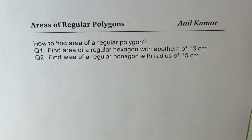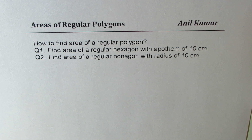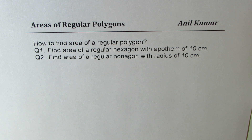I'm Anil Kumar. Let us now understand how to find area of regular polygons. I have two related questions. Question number one: find area of a regular hexagon with apothem of 10 centimeters. Question number two: find area of a regular nonagon with radius of 10 centimeters. Hexagon is a six-sided polygon, and nonagon is a nine-sided polygon.